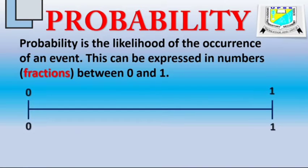Between 0 and 1, we have endless numbers of fractions. For 0, it is an impossible event or an event that is impossible to happen. One has certainty.